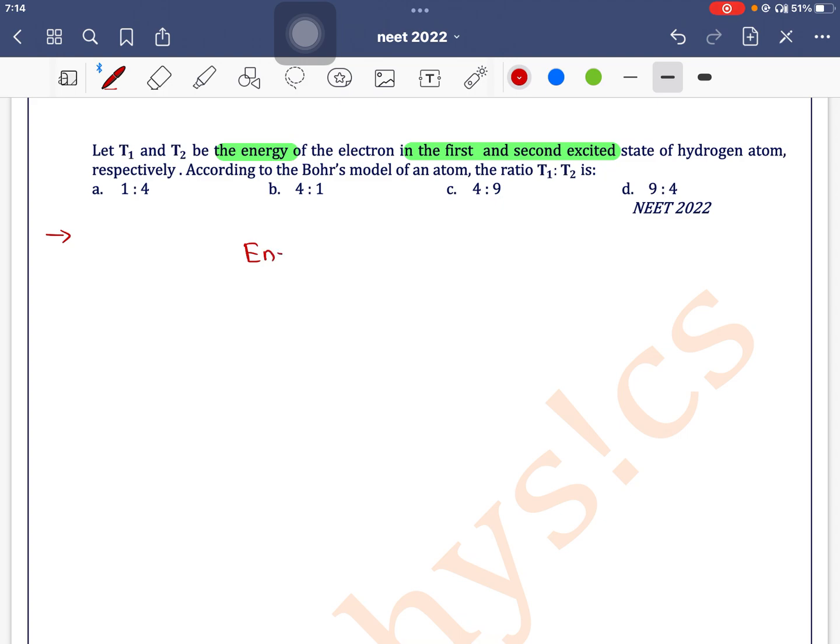So we know that energy of an electron in nth orbit is given as minus 13.6 divided by n square electron volt. So what is T1? For T1, it is the energy of electron in first excited state.